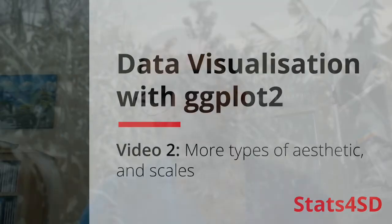We've seen how with the data, aesthetic mapping, and geometries we can make fairly nice straightforward plots in ggplot2. In this second video, we're going to look at how to extend that plotting, specifically thinking about more types of aesthetics and colors and how the scale functions work within ggplot2.